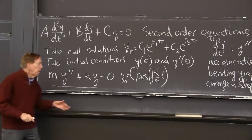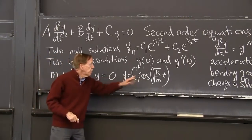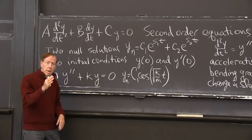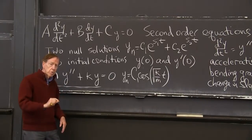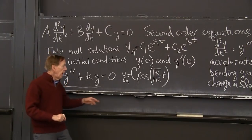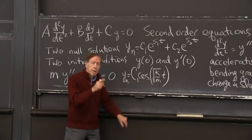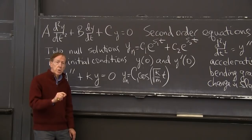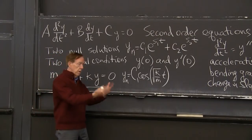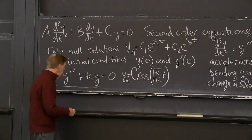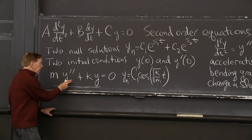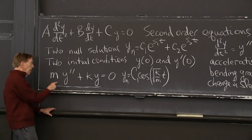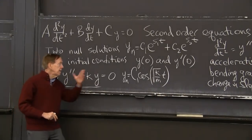There's a square root of k over m times t. And you have to see that if I take two derivatives of the cosine, that will produce minus the cosine, which I want. And because of that, the chain rule will bring out this square root twice. So it will bring out the factor k over m for y double prime. And that factor k over m, the m's will cancel, and I'll have the k that matches that k. It's a solution.